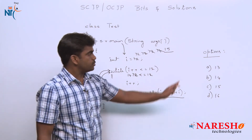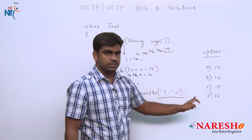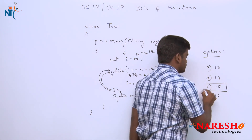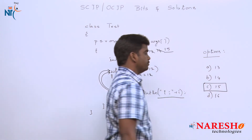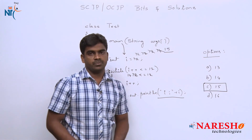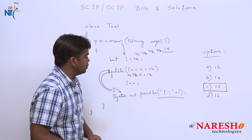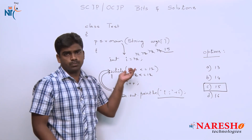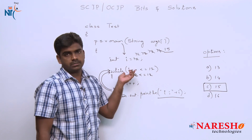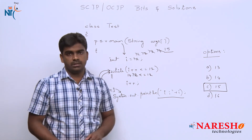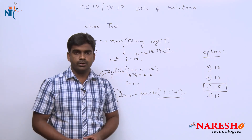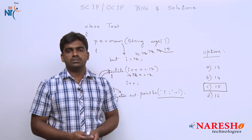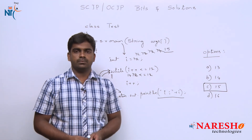So that will print. In the given options, the right answer for this problem is 15. This is how a while loop and post increment — the modify operator — executes in a Java application. Hope you understood. For more videos please subscribe to the Nourish Tech channel. Thank you.